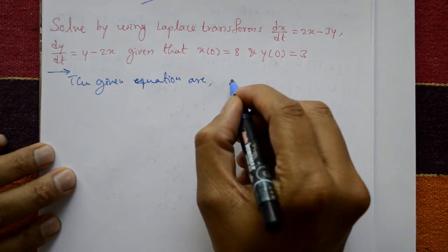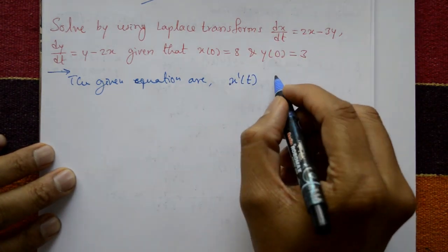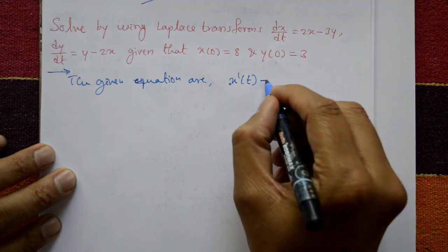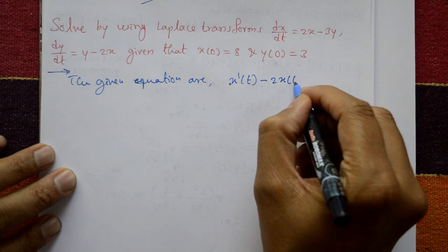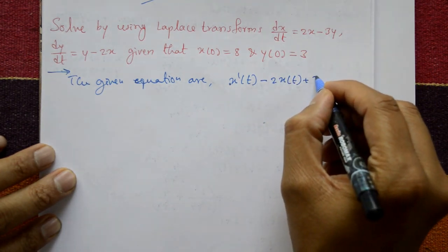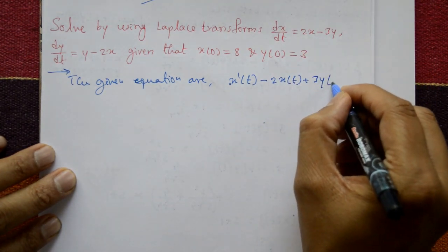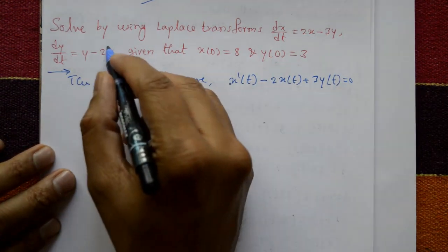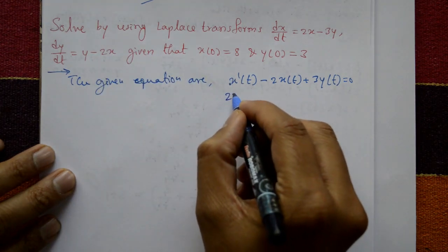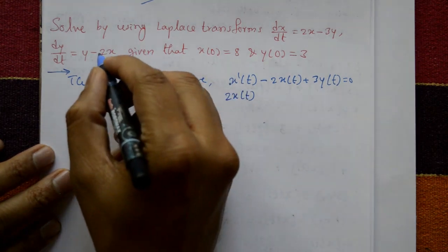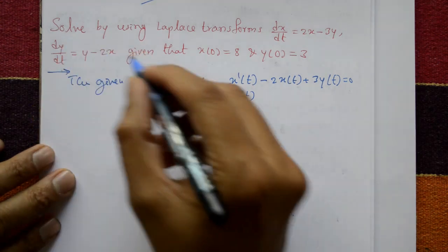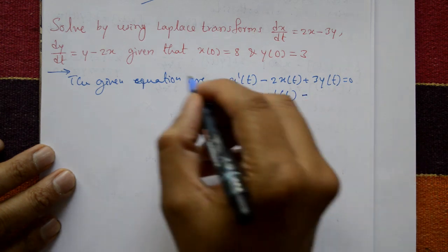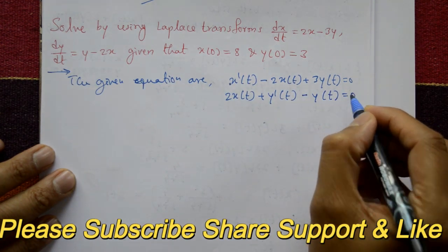Rearranging the first equation: x'(t) − 2x(t) + 3y(t) = 0. For the second equation, writing the x variable first: 2x(t) + y'(t) − y(t) = 0.